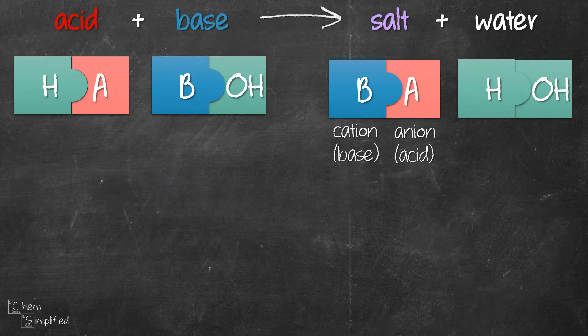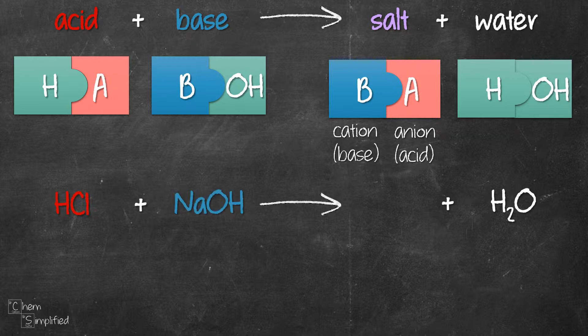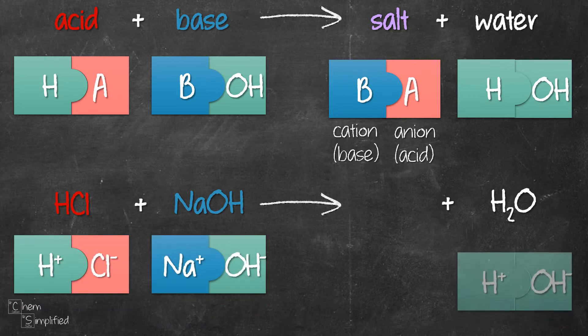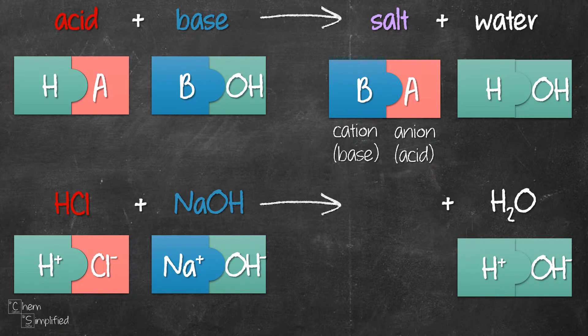Let's start by looking at a simple neutralization reaction between HCl and NaOH. When added to water, HCl will form H+ and Cl-, and NaOH will form Na+ and OH-. Refer to the Arrhenius acid-base theory video if you need more information on how to get the ions from acid and base.